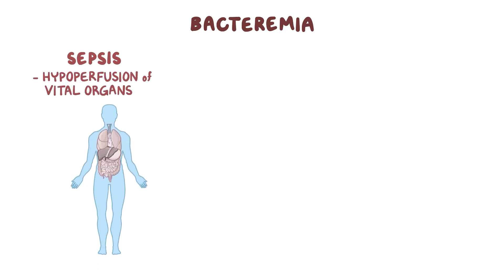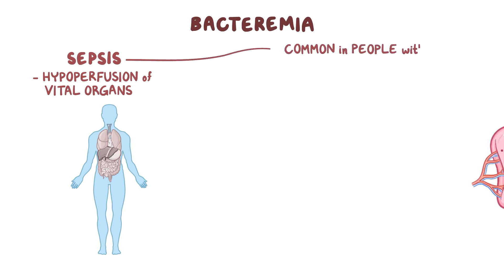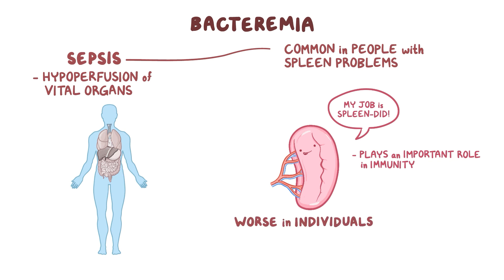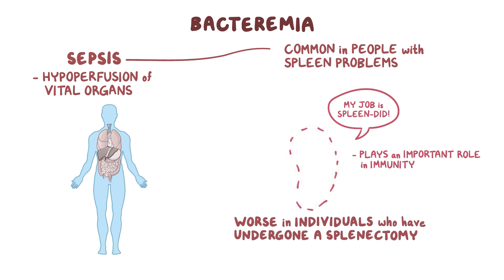Sepsis caused by strep pneumoniae is particularly common in people with spleen problems, because the spleen plays an important role in immunity, especially against encapsulated bacteria. So strep pneumoniae infections are typically worse in individuals who have undergone a splenectomy, or in those with sickle cell disease, who have functional asplenia.